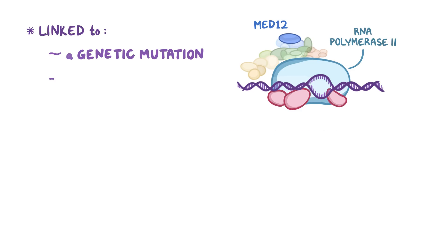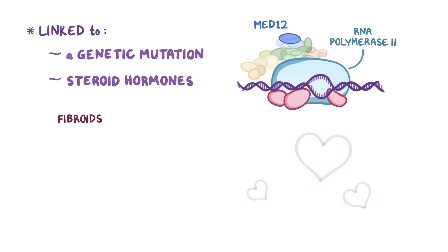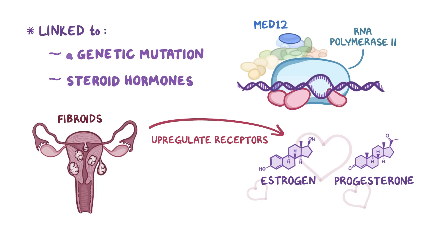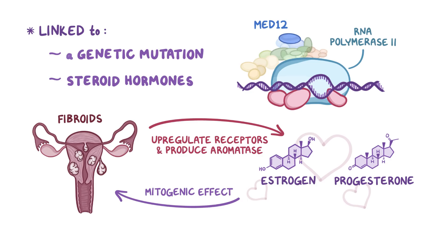Another factor in fibroid development is steroid hormones. Fibroids have a love affair with estrogen and progesterone. Fibroids upregulate their receptors for these two hormones, and also produce a lot of aromatase, an enzyme that converts androgens into estrogen. When these hormones bind to the myometrium cells, it has a mitogenic effect, meaning it promotes mitosis. Estrogen specifically upregulates growth factors like IGF-1, EGFR, and TGF-beta-1, and progesterone upregulates EGF, TGF-beta-1, and TGF-beta-3.